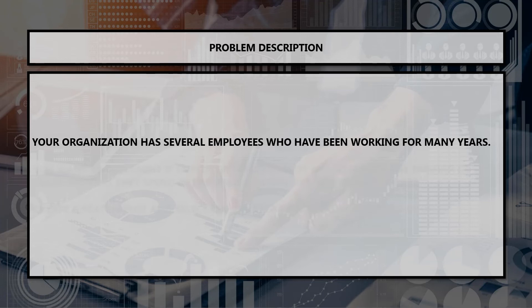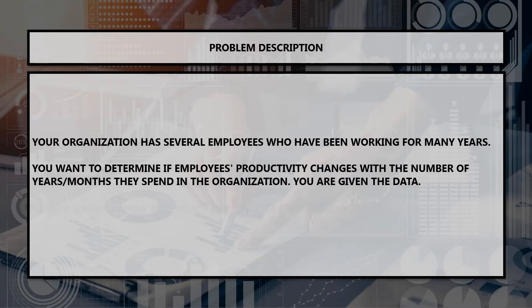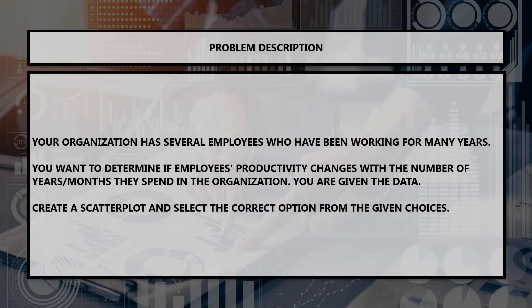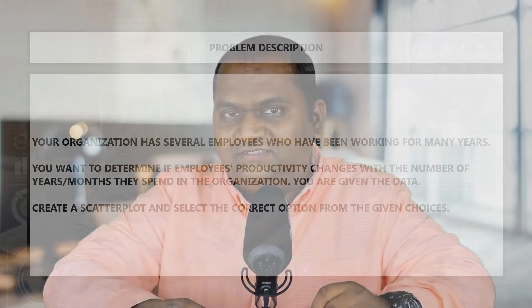Let's look at the example. I have provided a downloadable link to this data in a spreadsheet in the description section. Please feel free to download this spreadsheet and follow along this activity with me. Your organization has several employees who have been working for many years. You want to determine if employees' productivity changes with the number of years or months they spent in the organization. You are given the data — create a scatterplot and select the correct option from the given choices. We will look at the given options a little later. Let's take a quick moment to create the scatterplot.